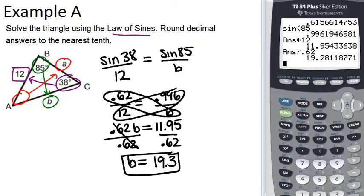Alright, so now we've figured out side B. In order to figure out side A, we first want to figure out this missing angle right here. So remember that the three angles in a triangle always add to 180 degrees. So to find angle A, we can do 180 minus 85 minus 38, which is 57. So angle A equals 57 degrees.